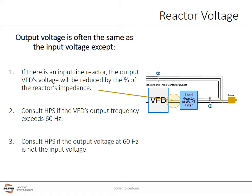A couple other things to remember: if the output frequency of the VFD is going to exceed 60 Hz, please consult HPS, as that needs evaluation. Also, VFDs don't always output at the same voltage as their input. For example, you can take a 480-volt input to a VFD and create a 240-volt 60 Hz output. In that case, the line reactor will have different characteristics and must be selected differently.